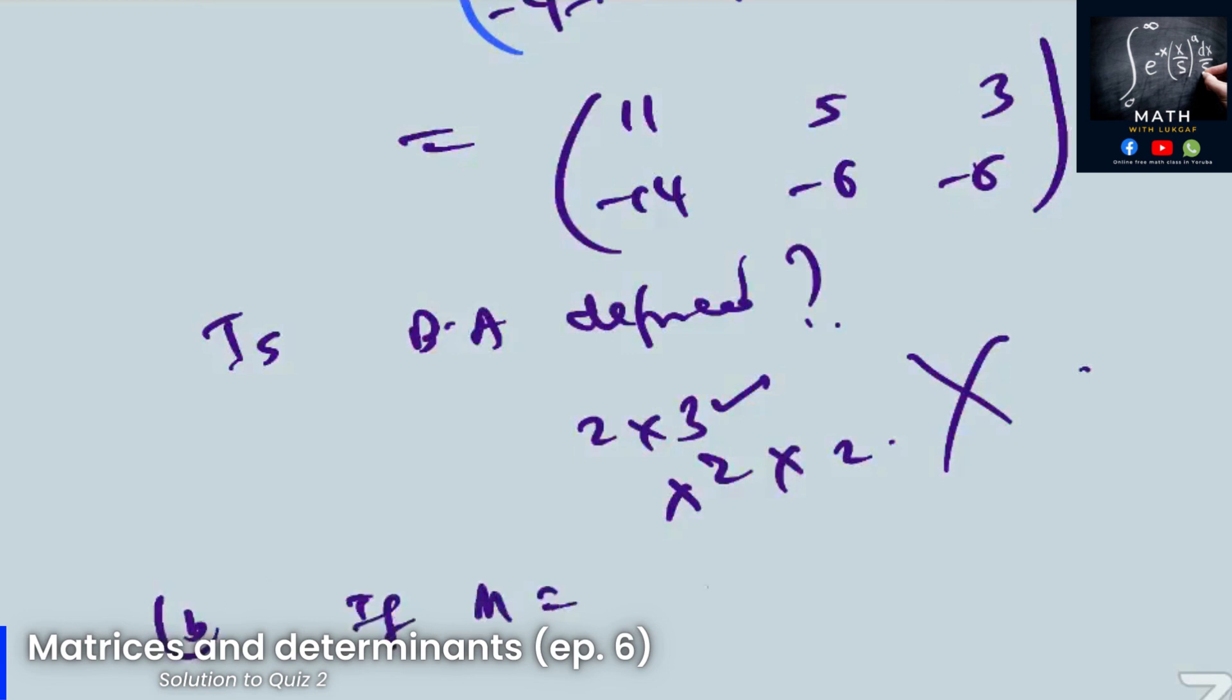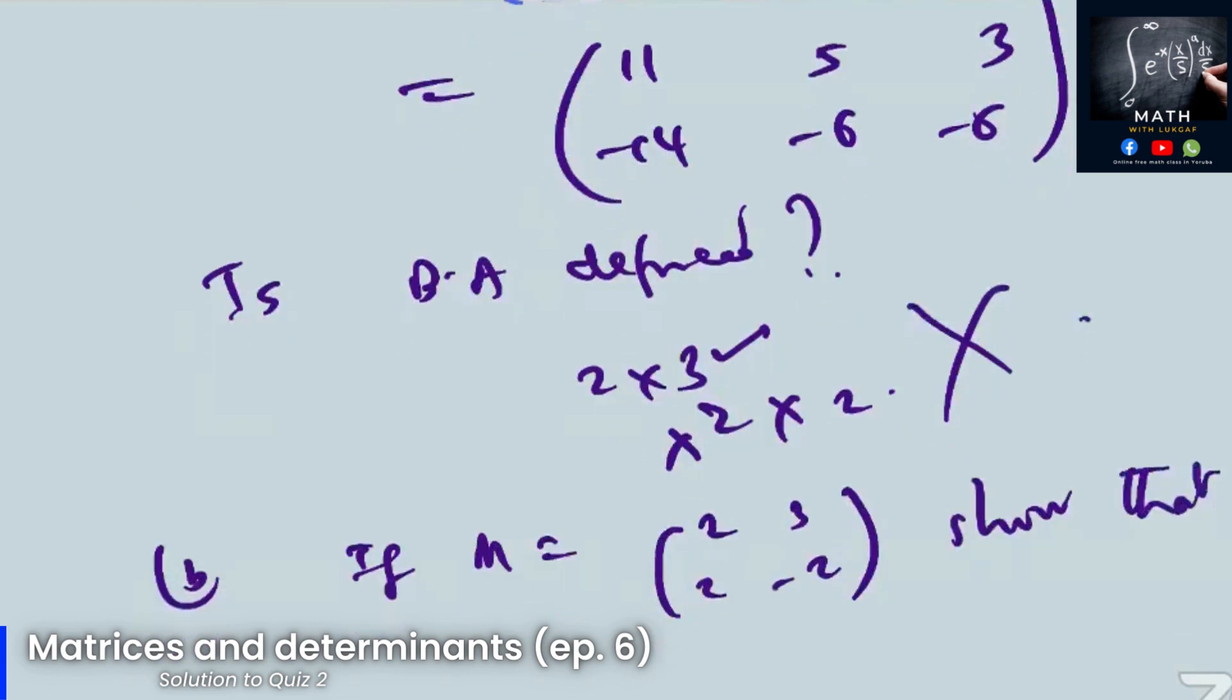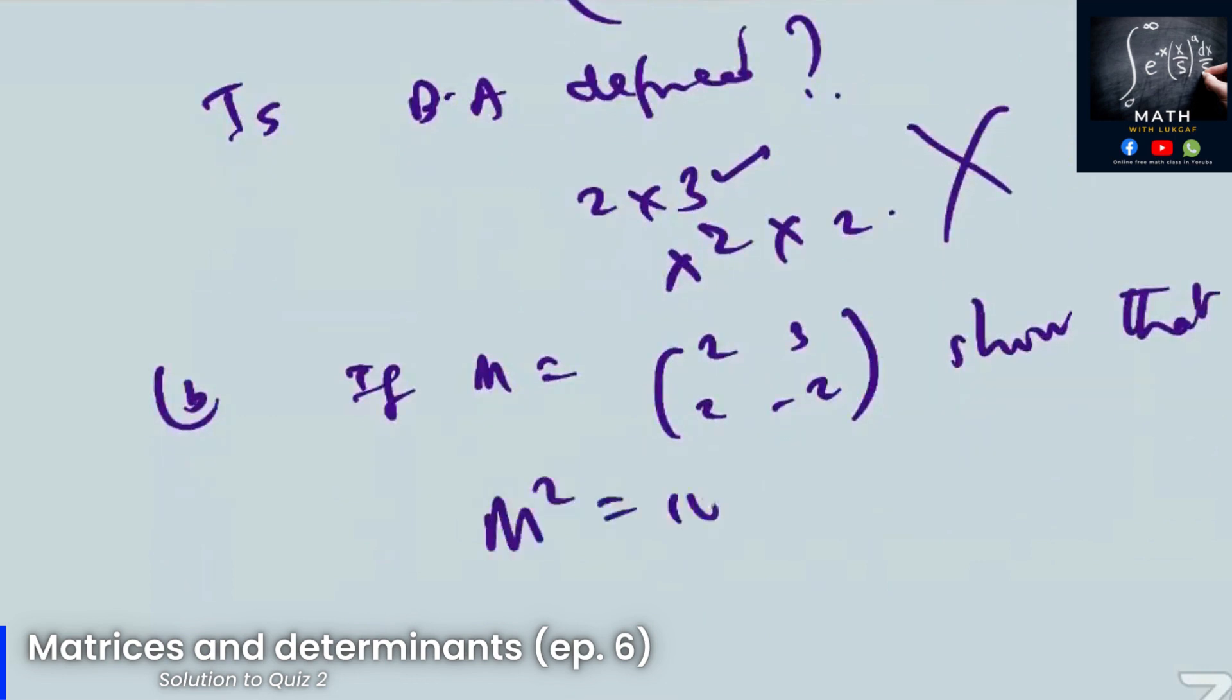If M is equal to [[2, 3], [2, -2]], show that M squared is equal to 10I. So here, where I is identity matrix 2 by 2.